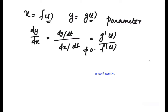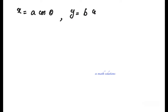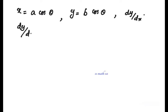So dy by dx means dy by dt divided by dx by dt. Let us try with one example. For example, x is equal to a cos theta and y is equal to b cos theta. We need to find dy by dx.